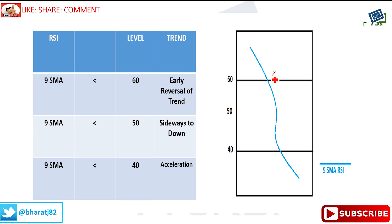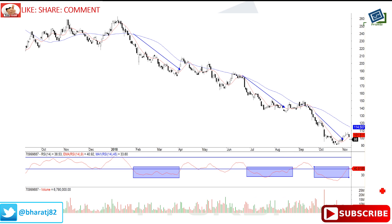When talking about downside acceleration: when the nine EMA crosses the 60 level on the downside, it is an indication of early trend reversal. When it crosses down the 50 level, it is an indication of a sideways-to-down move. When it moves beyond the 40 level, it is a full-proof sign that the trend is accelerating very speedily on the downside. On the chart you can see the highlighted levels where the RSI EMA moved below 40 — these are the places where price aggressively went down with no looking back, and you can make out the strength of that trend.